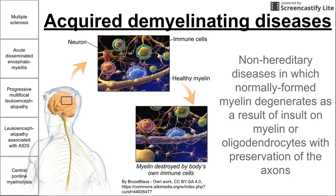This is a short video on acquired demyelinating diseases. These are differentiated from demyelinating diseases present from birth, congenital, or hereditary. While these five diseases might have some genetic component, they usually present later in life and are not present at birth. They are non-hereditary diseases in which normally formed myelin degenerates due to insult on the myelin or oligodendrocytes, while the axons are preserved.